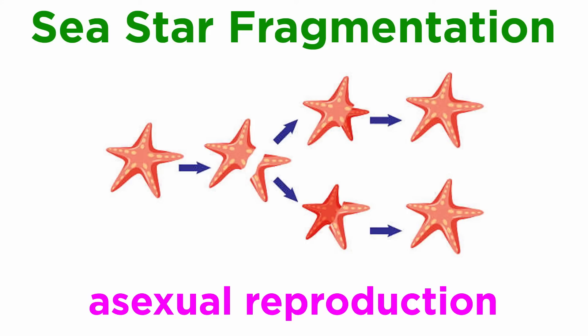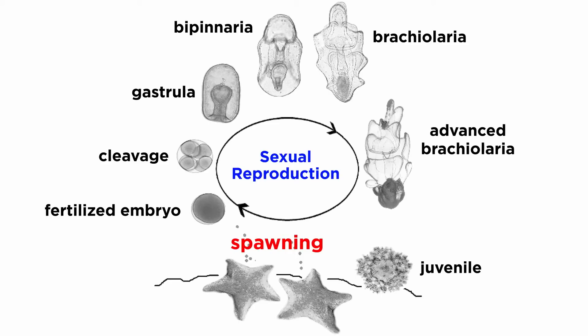Sea stars are able to reproduce asexually through fragmentation as long as part of the basal disc is preserved, and also sexually, usually indirectly, where both sexes release sperm and eggs into the water.